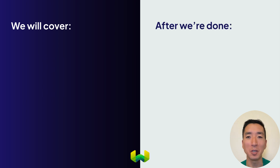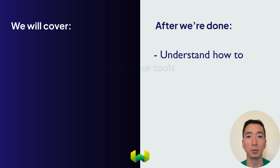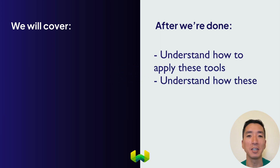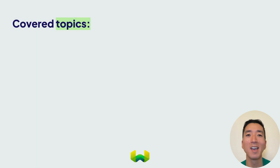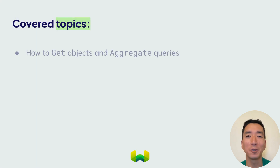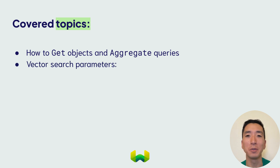After you're done with the unit, you'll have a good idea of how to apply these tools to get the information you need, as well as what's happening when you run these queries. We'll show you how to get matching objects from Weviate, and to aggregate information about groups of objects. And we'll also show you different, flexible ways in which you can perform vector searches in Weviate.